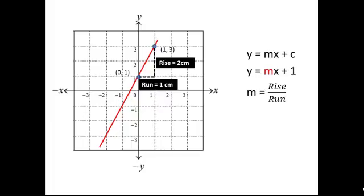We can then substitute these values into the formula for gradient on the right. This gives us 2 over 1, which equals 2. Therefore, the gradient of this line is 2.